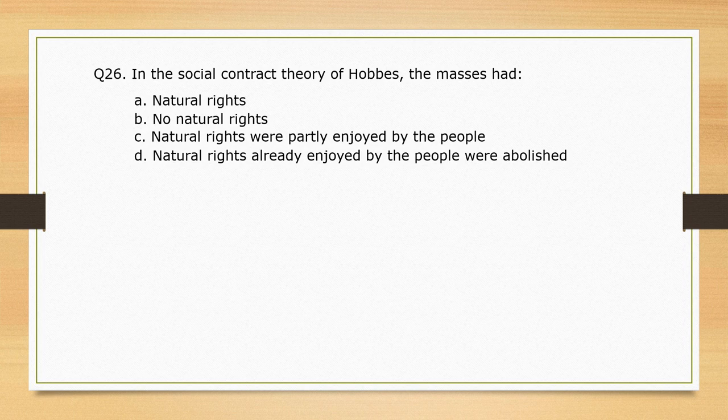In the social contract theory of Hobbes, the masses had — options are given. The correct option is option A: natural rights.